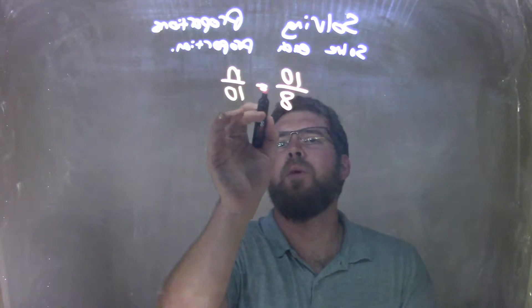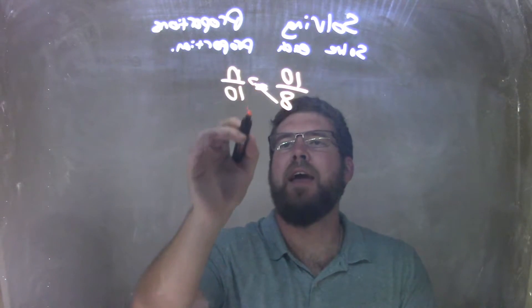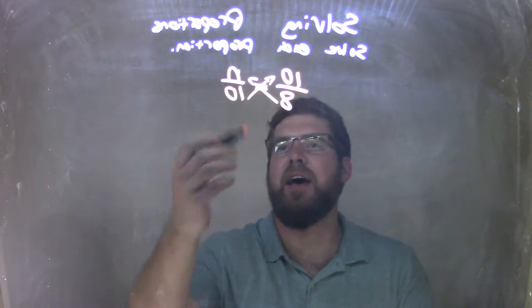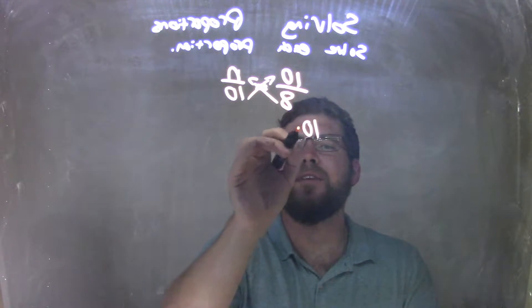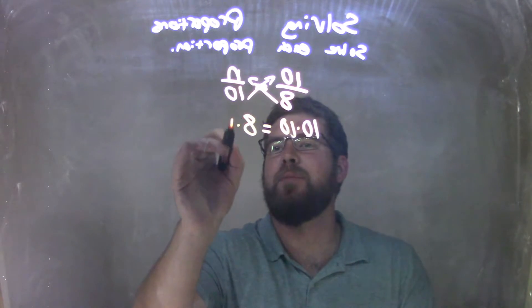First things first, we want to cross-multiply. Multiply the 8 by the n and 10 by the 10. So 10 times 10 equals 8 times n.